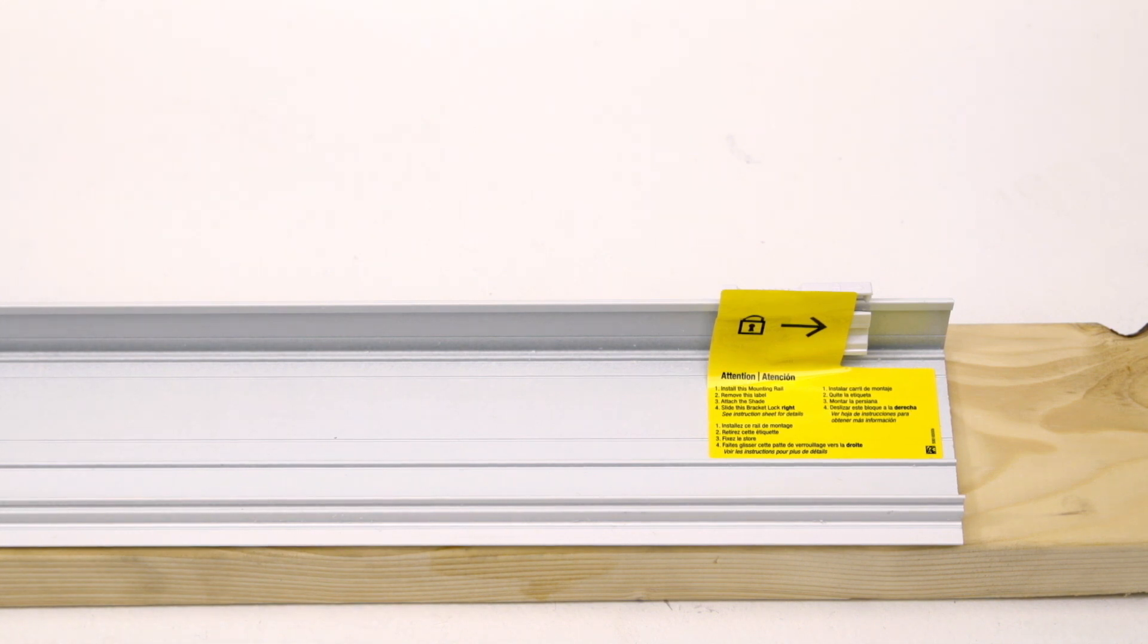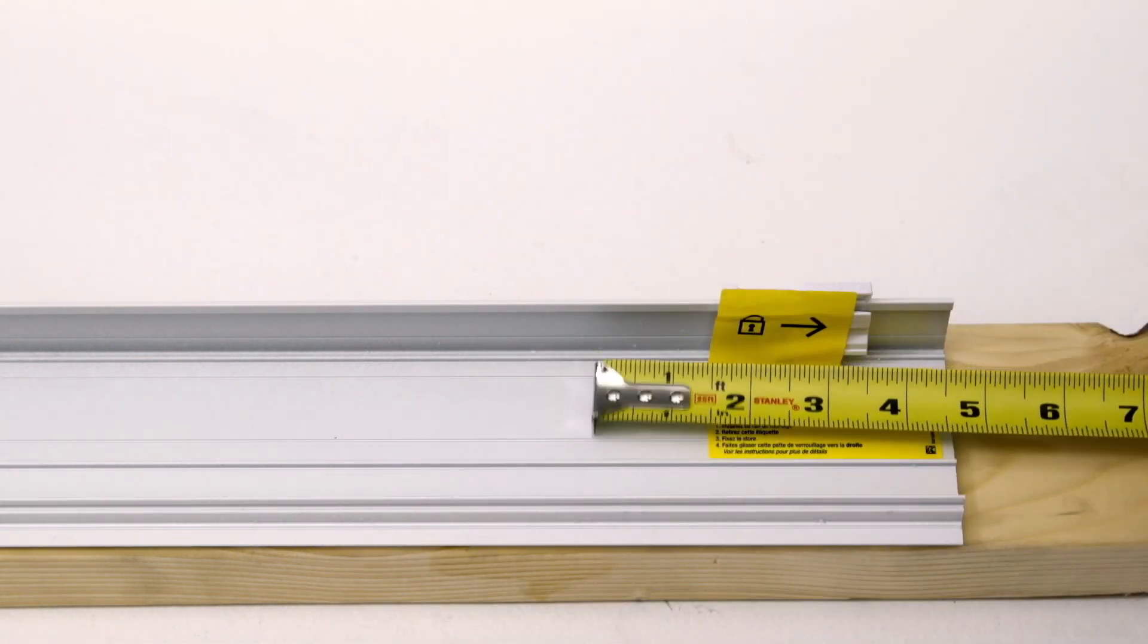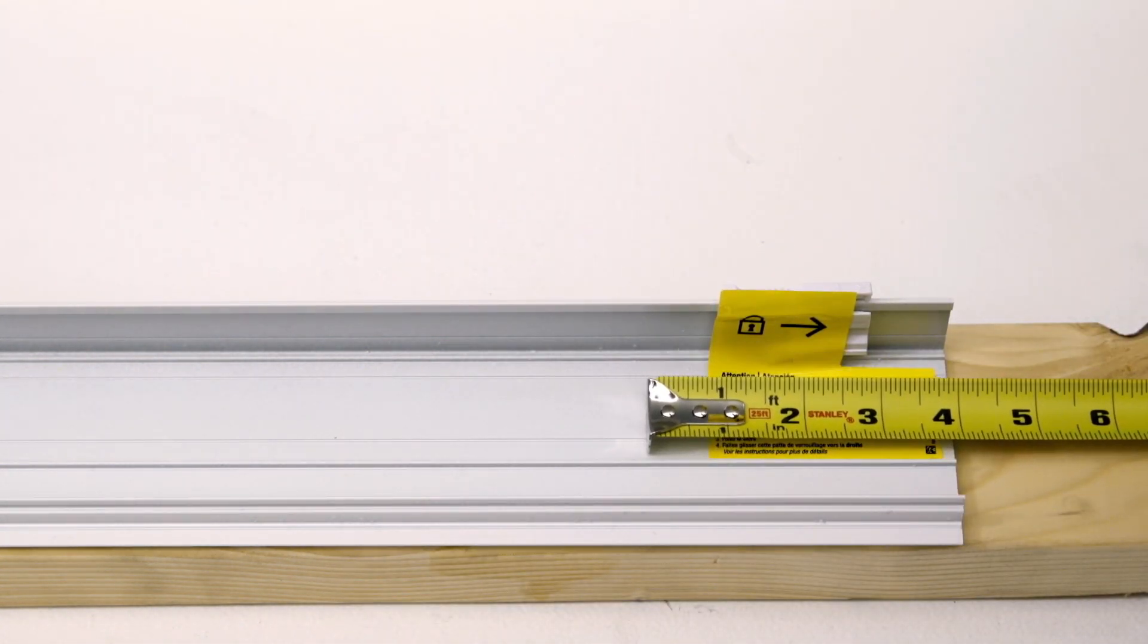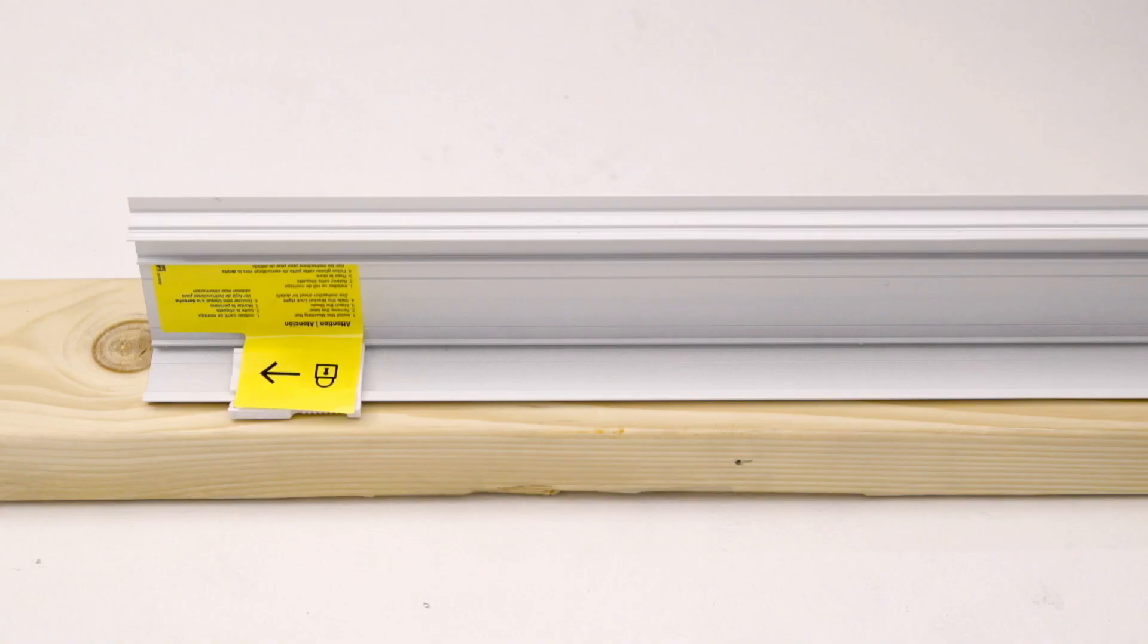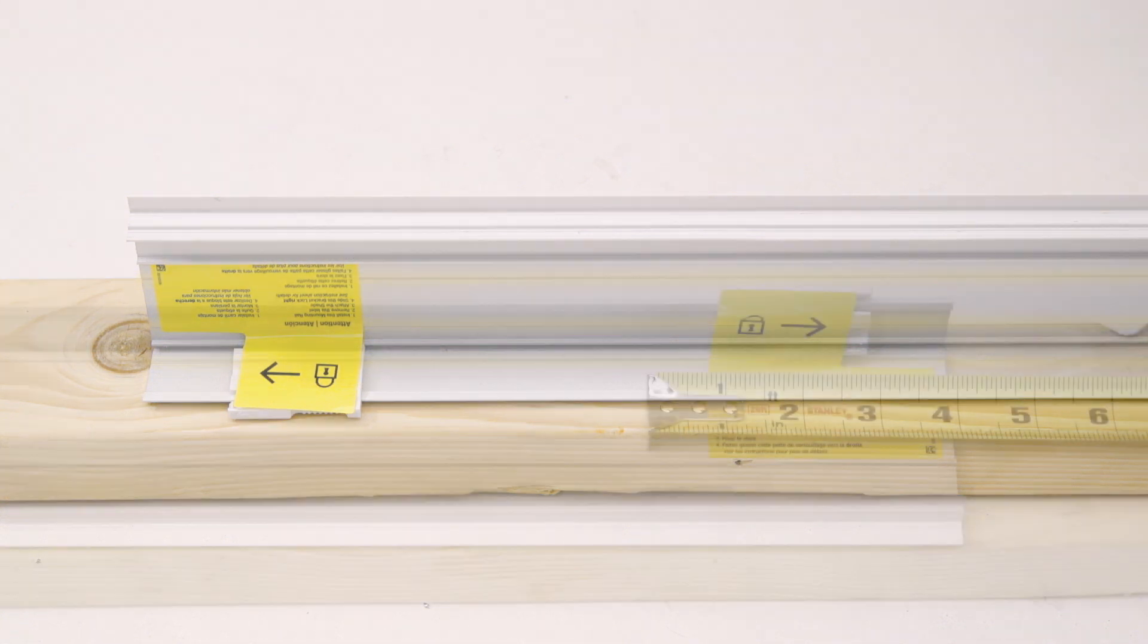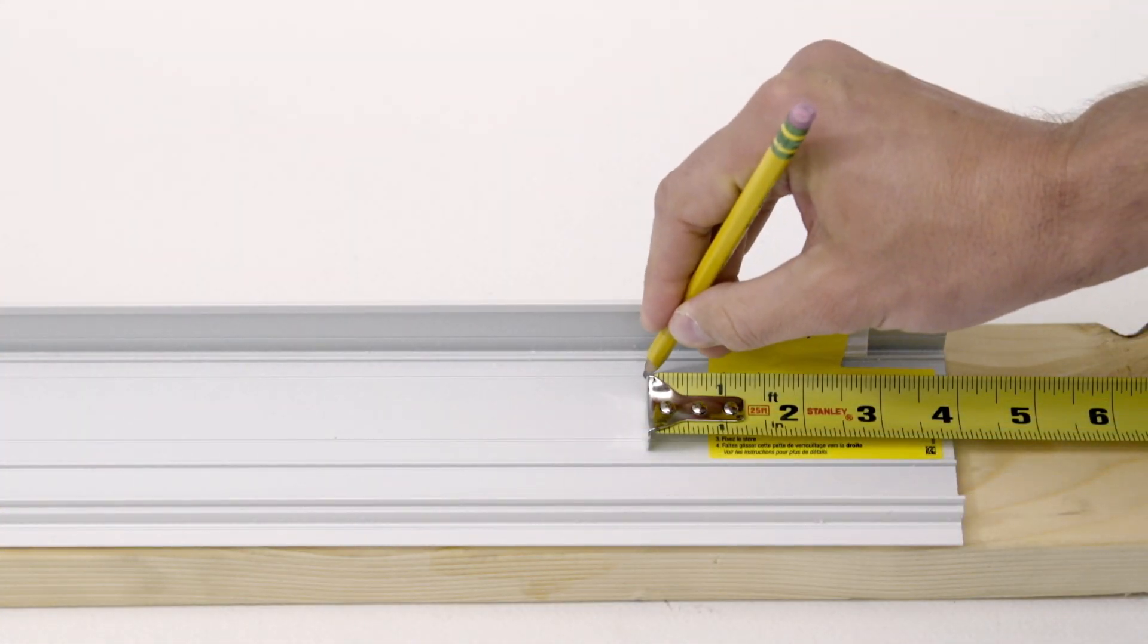Decide where to place your mounting screws. They'll need to be approximately 3 to 5 inches from each end of the mounting rail. You can place the screws through the top or the back of the mounting rail. The rail features grooves that indicate recommended placement and will help to stabilize the point of your drill bit. Use a pencil to mark screw locations.